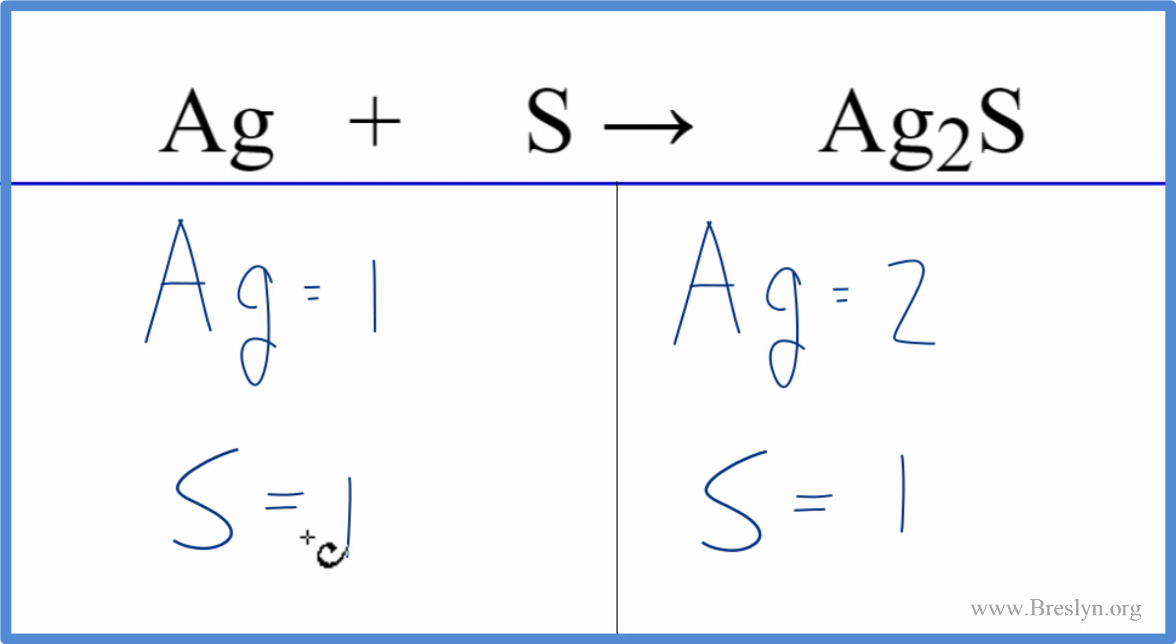So it's not balanced. These numbers aren't the same. We can change the coefficients. These are the numbers in front of each one of these terms, but we can't change the numbers after. We can't change this 2, or we can't add a subscript here.